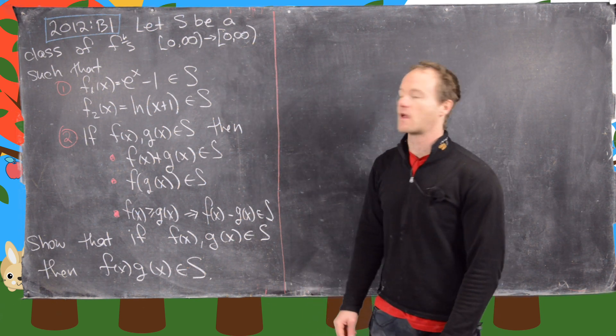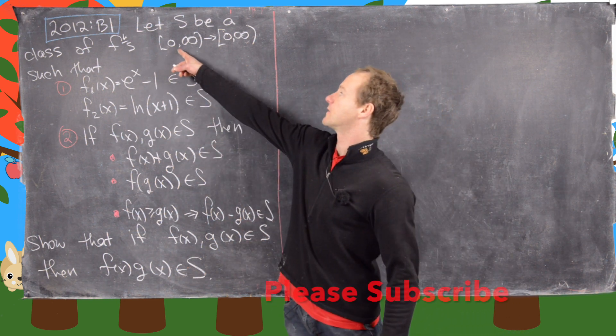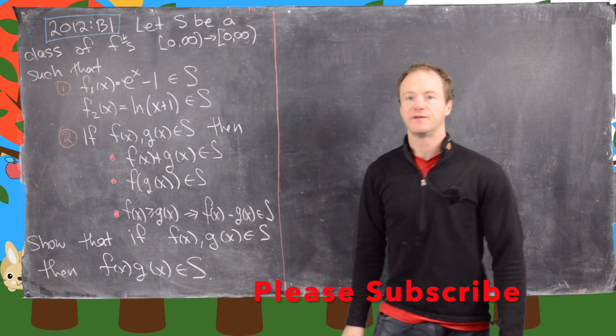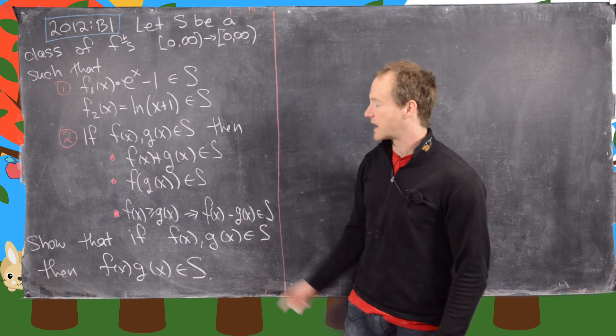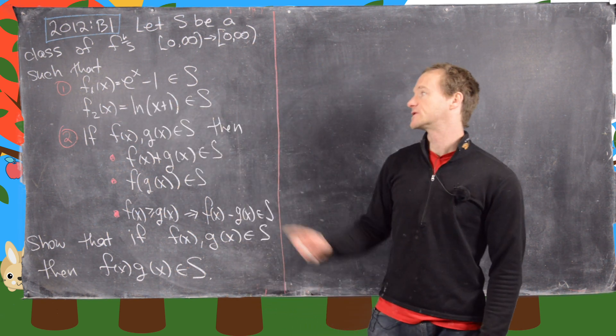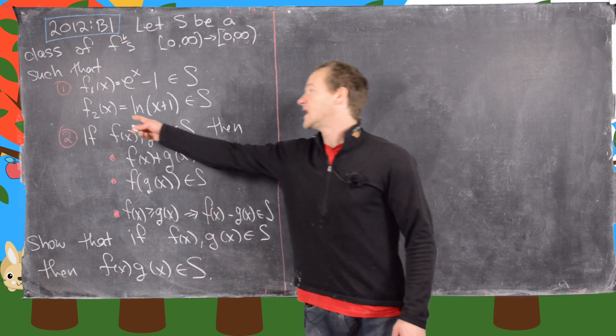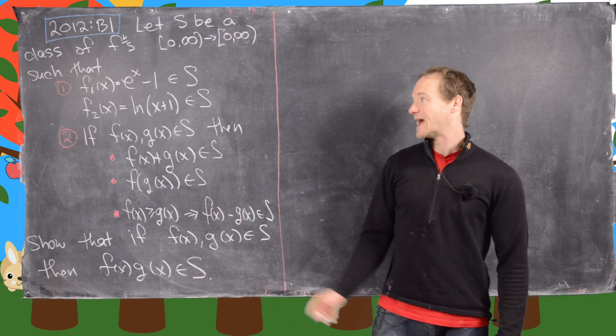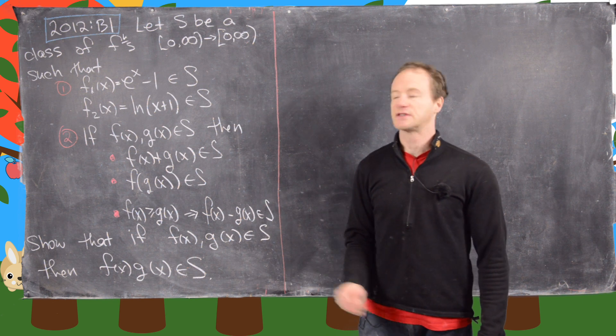Let S be a class of functions from zero infinity to zero infinity such that we have the following characteristics. F1, which is e to the x minus one, is an element of S. F2, which is the natural log of the quantity x plus one, is in S.